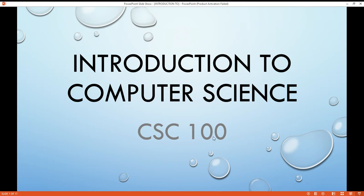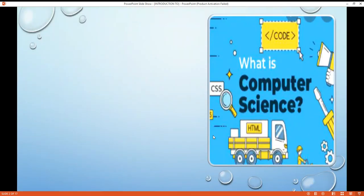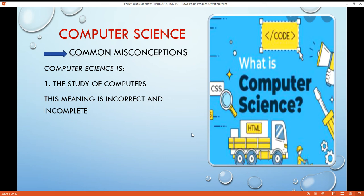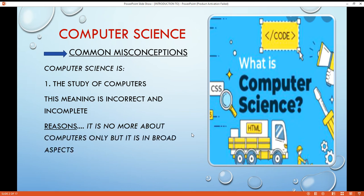Let's see what is computer science. Computer science has common misconceptions. The first conception is computer science is the study of computers. This apparently obvious definition is actually incorrect, or to put it more precisely, incomplete. For example, some of the earliest and most fundamental theoretical work in computer science took place from 1920 to 1940, years before the development of the first computer system. The reason is it is no more about computers only, but it is in broad aspects.